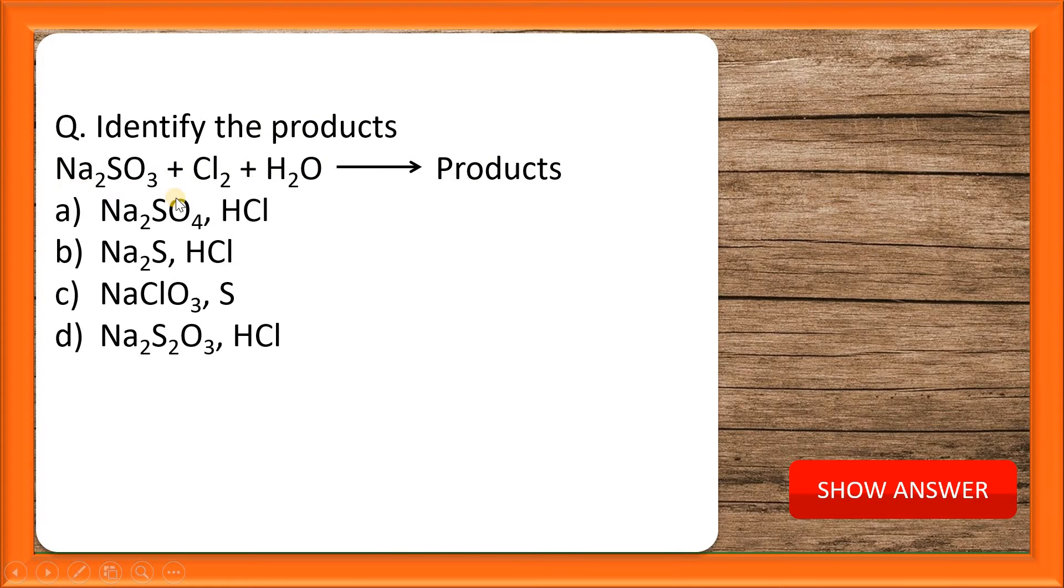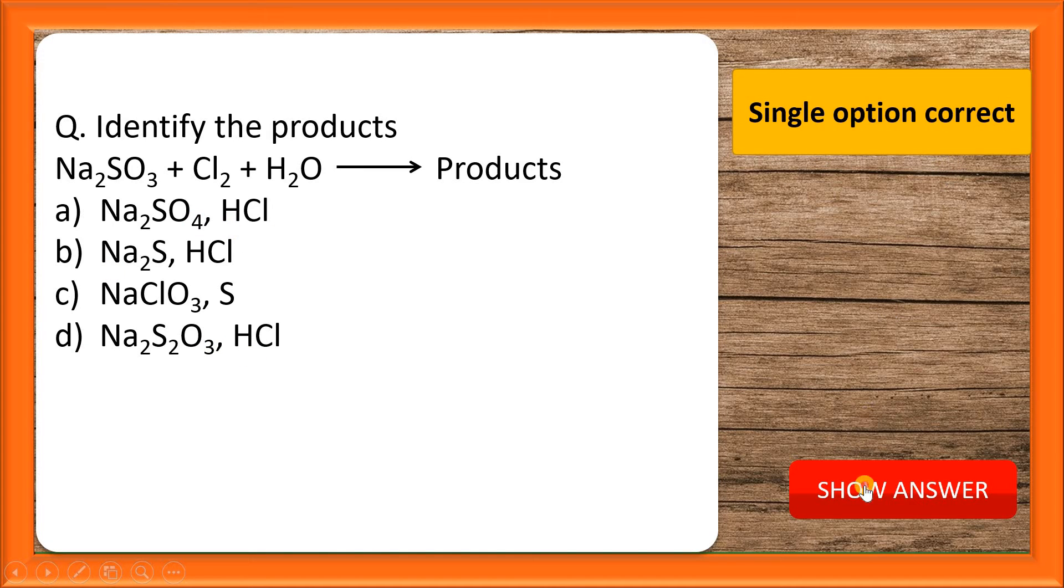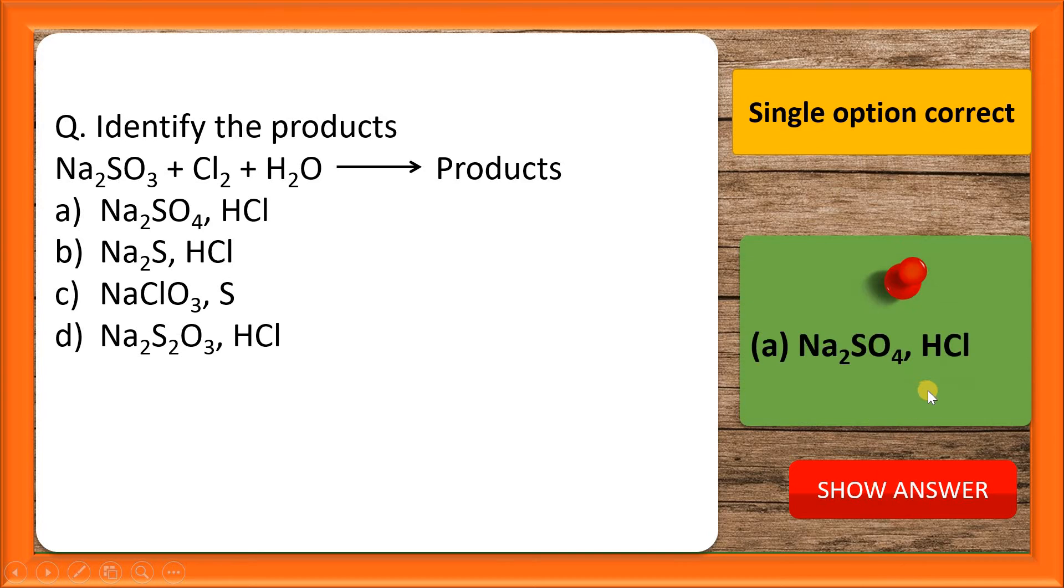Identify the products: Na2SO3 plus Cl2 plus water gives the following products. These are the options, students. This question is single option correct category and its answer is option number a.